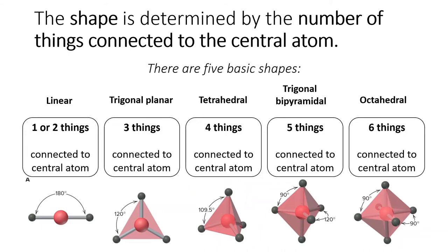When one or two things are connected to the central atom, we call this shape linear. When three things are connected to the central atom, the shape is trigonal planar. When four things are connected to the central atom, the shape is tetrahedral. If you play board games, the tetrahedron is the same shape as a D4 die.